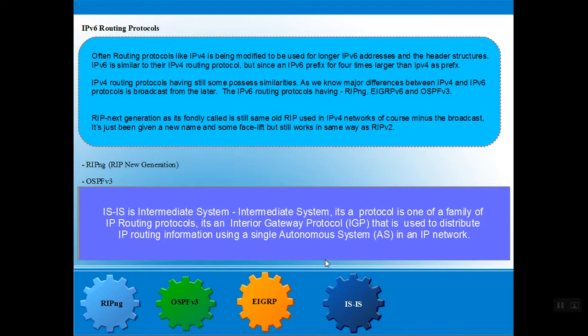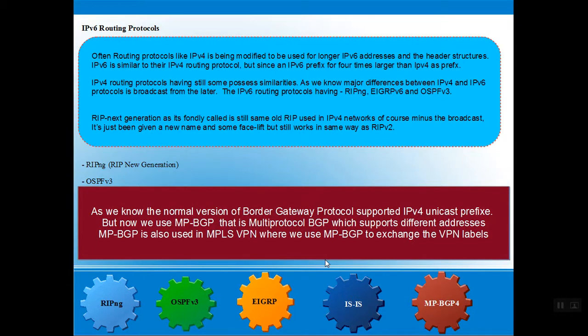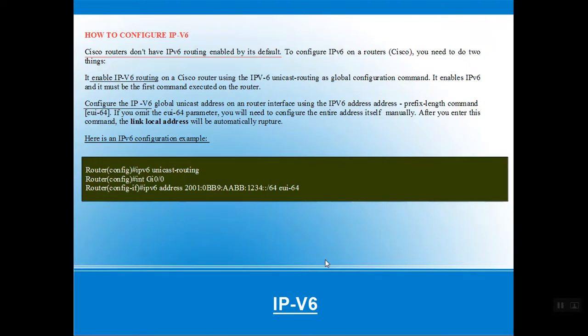IS-IS, or Intermediate System to Intermediate System, is a routing protocol that uses an Autonomous System (AS) within your IP network. MP-BGP4 is the multiprotocol form of Border Gateway Protocol used in IPv4 as unicast. So these are the five IPv6 routing protocols: RIPng, OSPFv3, EIGRP, IS-IS, and MP-BGP4.